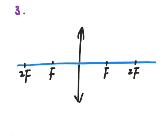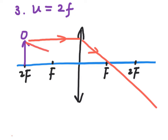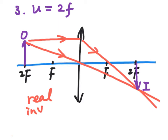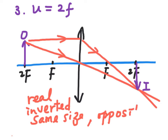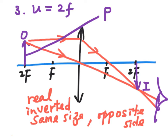The third case is when the object is put at 2f — that is, the object distance u equals 2f. By using light rays parallel to the principal axis and passing through the center, we find that the image will be at 2f on the other side, and the image will be the same size as the object. So if the object is the letter P, the image will be of the same size.